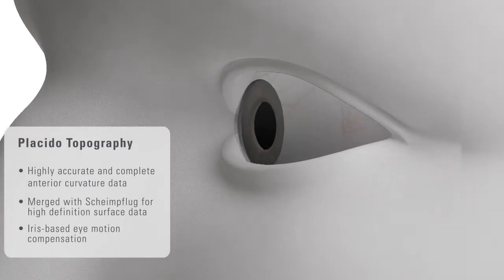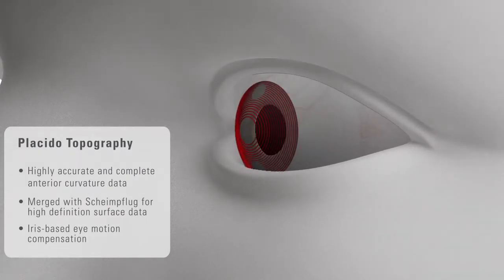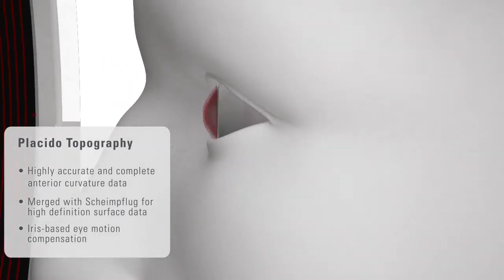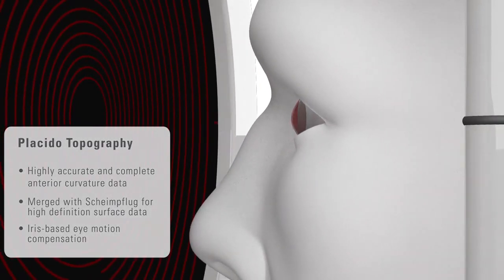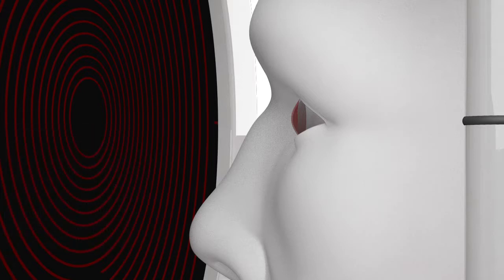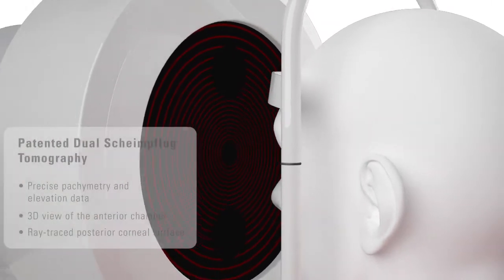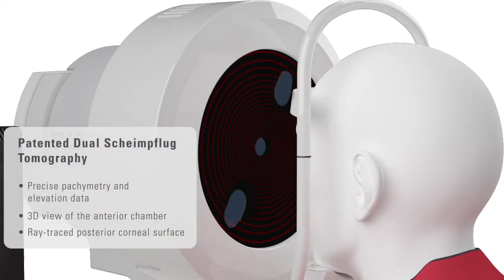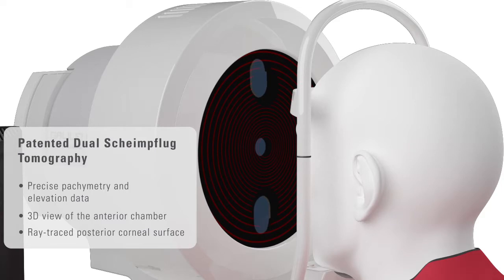With Placido topography, the Galilei G6 is able to deliver highly accurate anterior curvature data. Merged with Scheimflug, high-definition anterior and posterior corneal surface data can be achieved. An intelligent iris tracking system compensates for eye motion. The patented dual Scheimflug tomography allows for precise pachymetry and elevation data, and a complete 3D view of the anterior chamber of the eye is created.